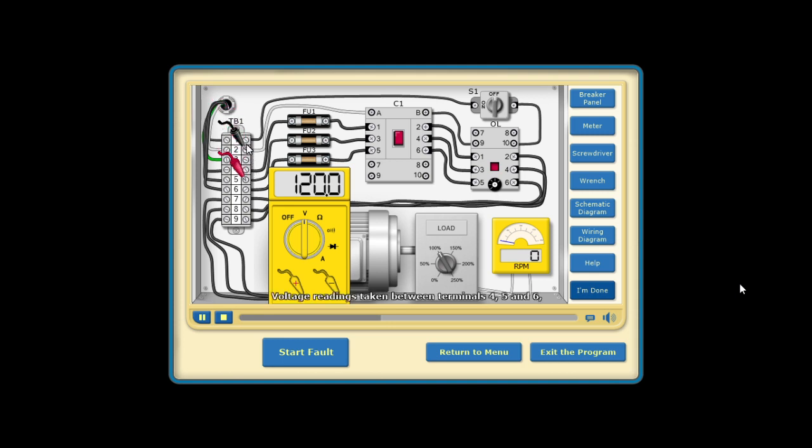Voltage readings taken between terminals 4, 5, and 6 show the phase-to-phase supply voltage.